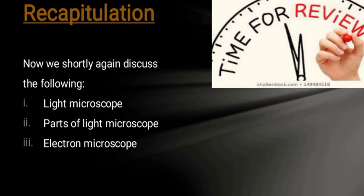The light microscope provides a clear image, but the electron microscope is more powerful than the light microscope. We use the electron microscope to see cell organelles — the structures inside the cell — which cannot be seen with the light microscope.